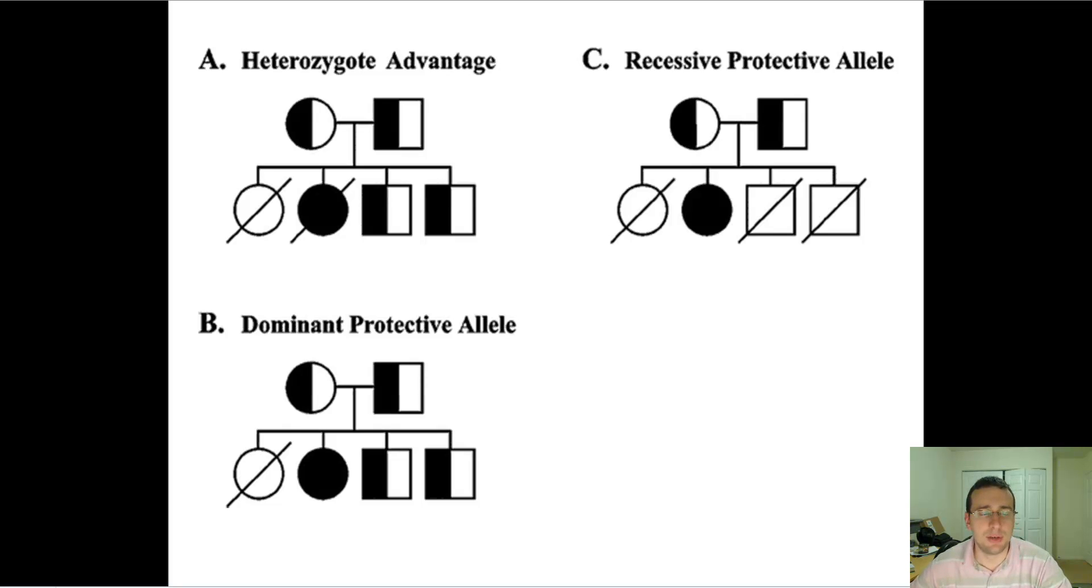This is an example of different types of selection in terms of the advantages that different kinds of alleles can possibly give.